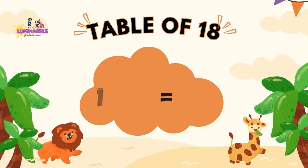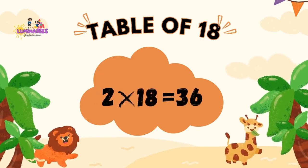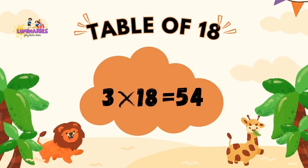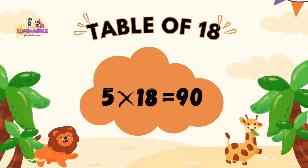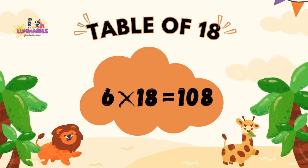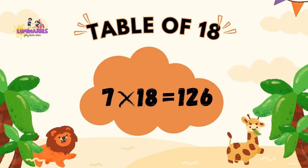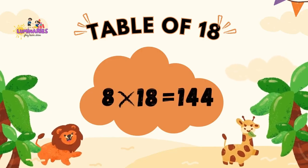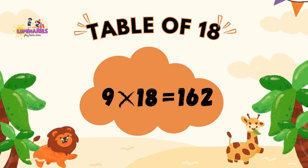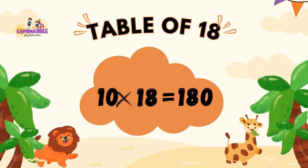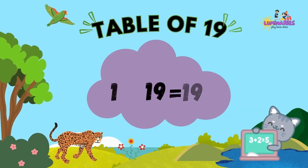Table of 18. 1 x 18 is 18. 2 x 18 is 36. 3 x 18 is 54. 4 x 18 is 72. 5 x 18 is 90. 6 x 18 is 108. 7 x 18 is 126. 8 x 18 is 144. 9 x 18 is 162. 10 x 18 is 180.